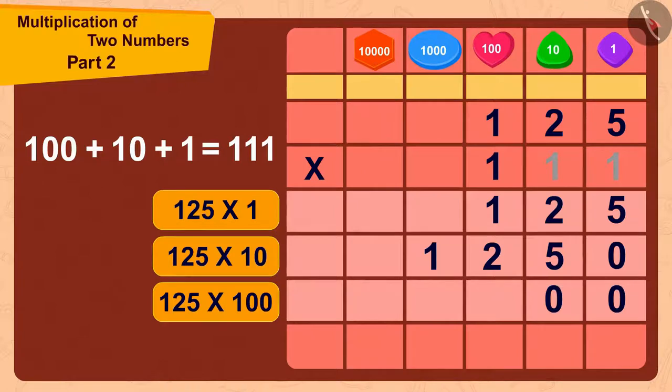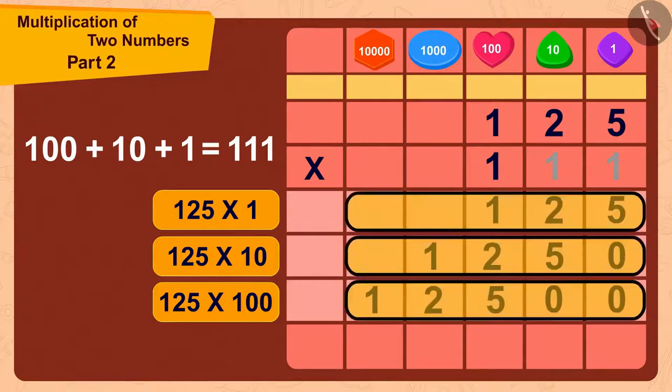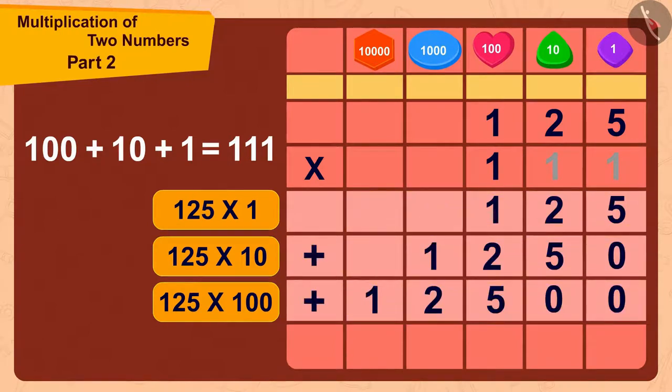And now, we just have to multiply 125 with 1. Now, by adding these three numbers, in the end, we get the answer to a multiplication, 125 times 111 as 13,875.